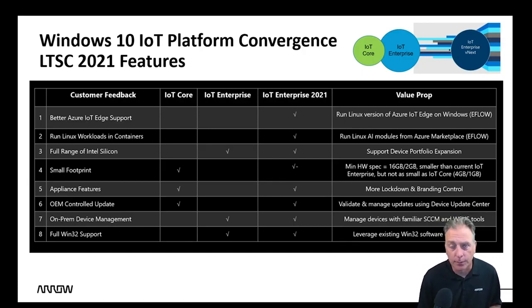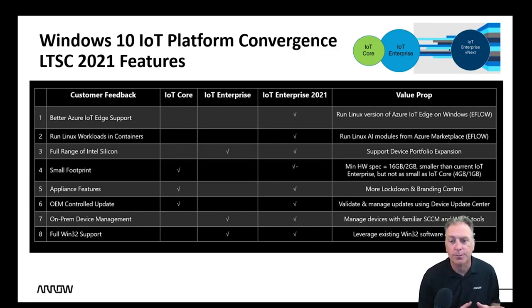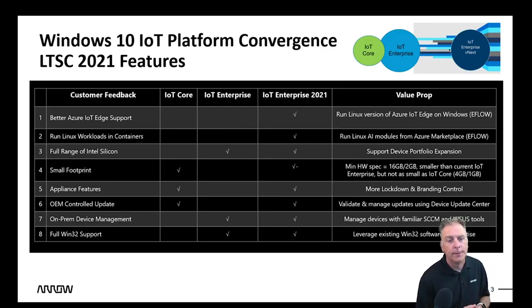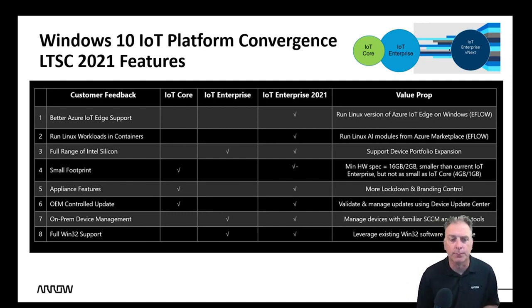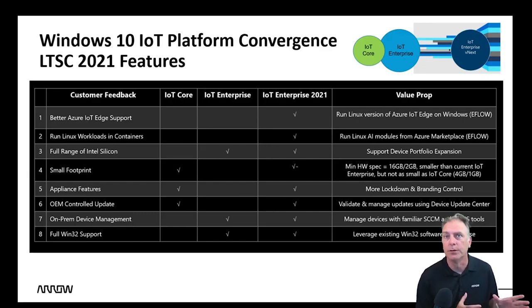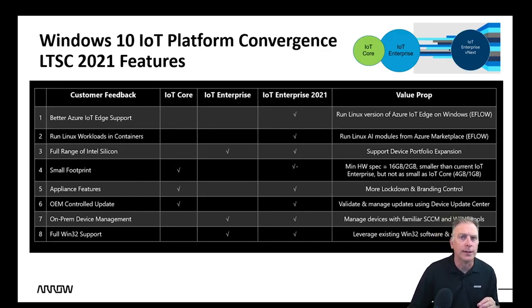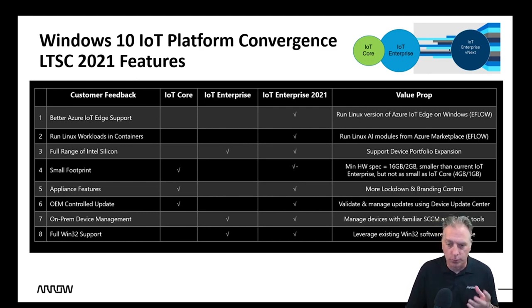There's also lots of new silicon support around Intel and ARM. You'll notice the chart doesn't explicitly show ARM, but this product will be supporting ARM silicon — more to come on that. Small footprint is a huge benefit of this new product: the ability to reduce your footprint, even getting down to possibly in the eight gig space range. There are also many new management, control, and lockdown features, and the ability to manage and control your devices remotely more so than previously. And lastly, full Win32 support — IoT Core did not support Win32 while Enterprise did, and this new product will continue to include Win32 support.